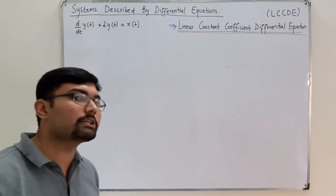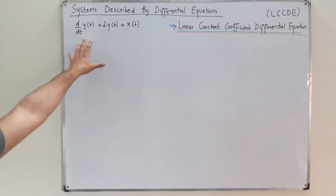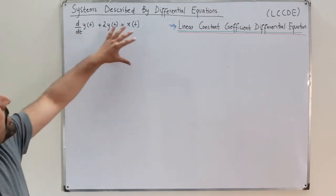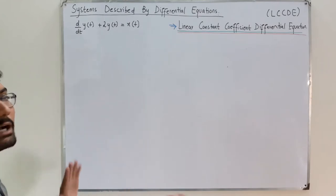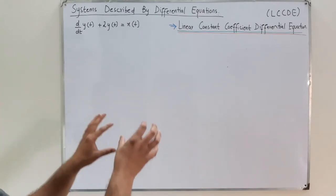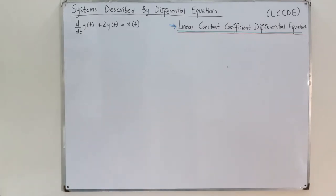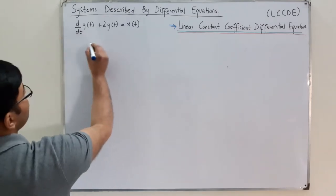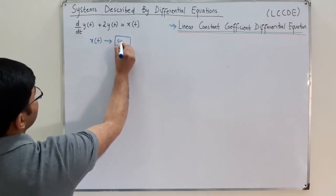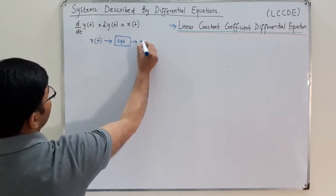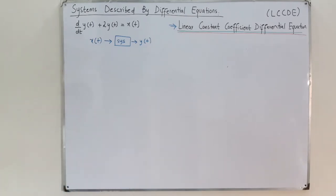This is not showing us the relationship between the input and output directly. You cannot see what the relationship is between input and output — we do not have an explicit representation, this is an implicit one. As we had previously, the output on one side and the input on the other side gave us a clear picture. So to find that clear picture, we need to solve this equation. This is representing a system — you have an input x(t) given to that system described by this equation, and it gives you an output y(t).